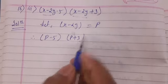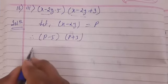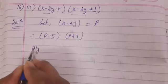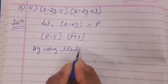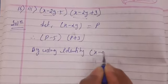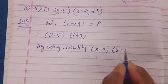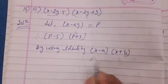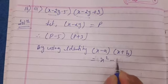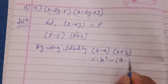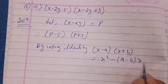By using identity (x - a)(x + b), it is equals to what? It is equals to x² - (a - b)x - ab.